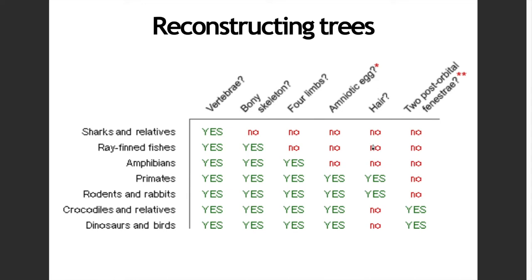We usually use different characters or character traits in reconstructing these trees. For example, we use different characters like presence of forelimb, amniotic egg, presence of hair, the presence of your vertebra — your spine — and so on and so forth. Aside from that, we can also use different sequences to reconstruct our trees. That's the more updated form of reconstructing trees — we look at the genetic material that is in them.